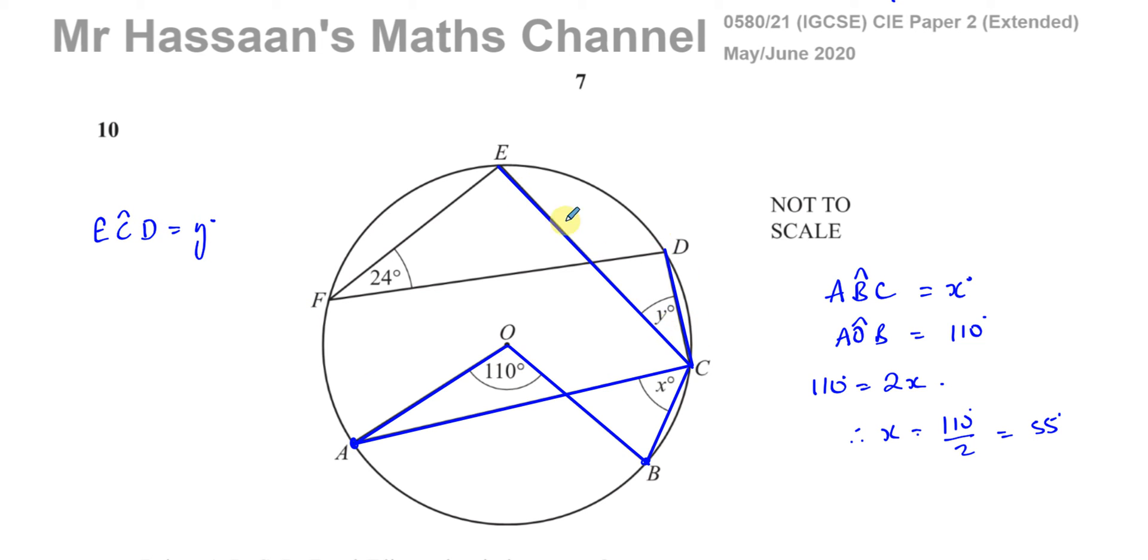So if you do a very similar thing, what other angle is standing on this arc ED? The angle Y, you can see here, that you have the angle ECD is our angle Y. What other angle stands on ED? Well, we can see it's angle F, angle EFD. That's also standing on the same two points, E and D. Both these angles originate from this point. So we can say angle EFD is equal to 24.